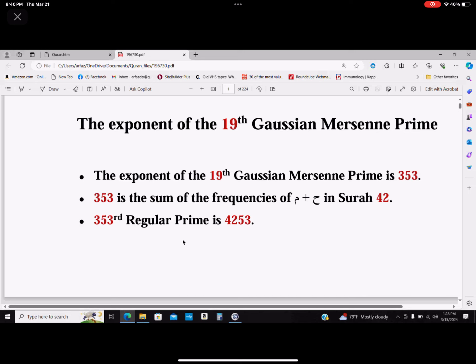The exponent of the 19th Gaussian Mersenne prime. I'm going to give you this introduction here so we can get to the places that link these things together that we didn't know before. The exponent of the 19th Gaussian Mersenne prime is 353.